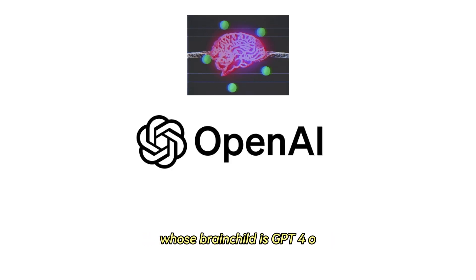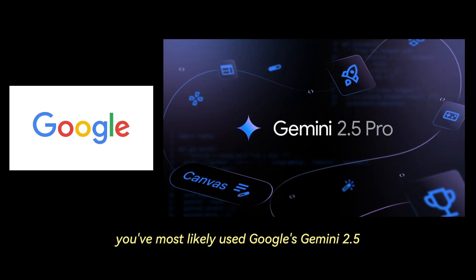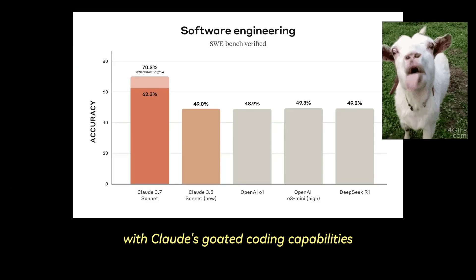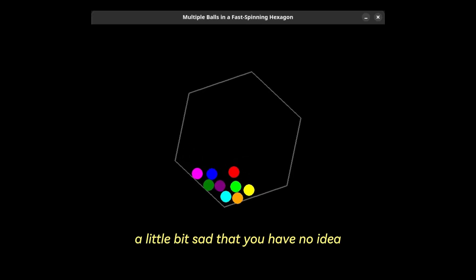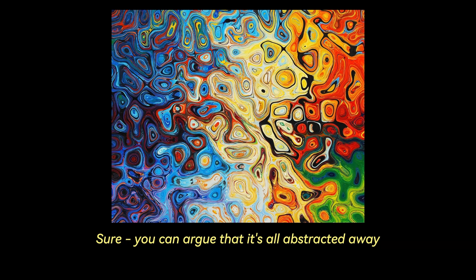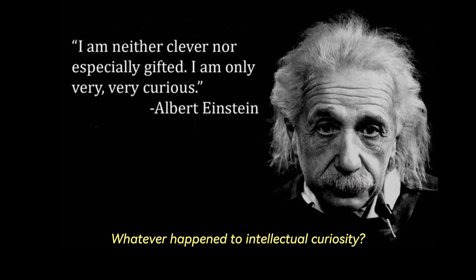You've definitely heard of OpenAI, whose brainchild is GPT-4o, and if you're a developer, you've most likely used Google's Gemini 2.5, or Anthropic's Claude Sonnet 3.7, with Claude's goated coding capabilities. But isn't it at least a little bit sad that you have no idea what is happening behind the curtain? Sure, you can argue that it's all abstracted away and it's a neat little black box, but this is important to know. Whatever happened to intellectual curiosity?